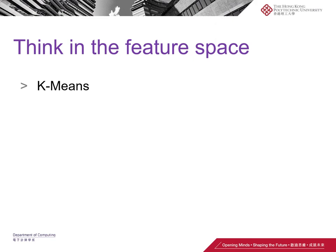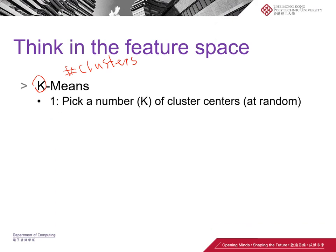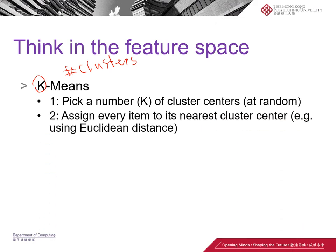In k-means, the k means the number of clusters — how many clusters we want. At the very beginning, k-means will pick k cluster centers, which are considered as representatives of the clusters. Then we assign the rest of the items to their nearest cluster center. Initially these are randomly selected, and we use Euclidean distance to evaluate which center is nearest.